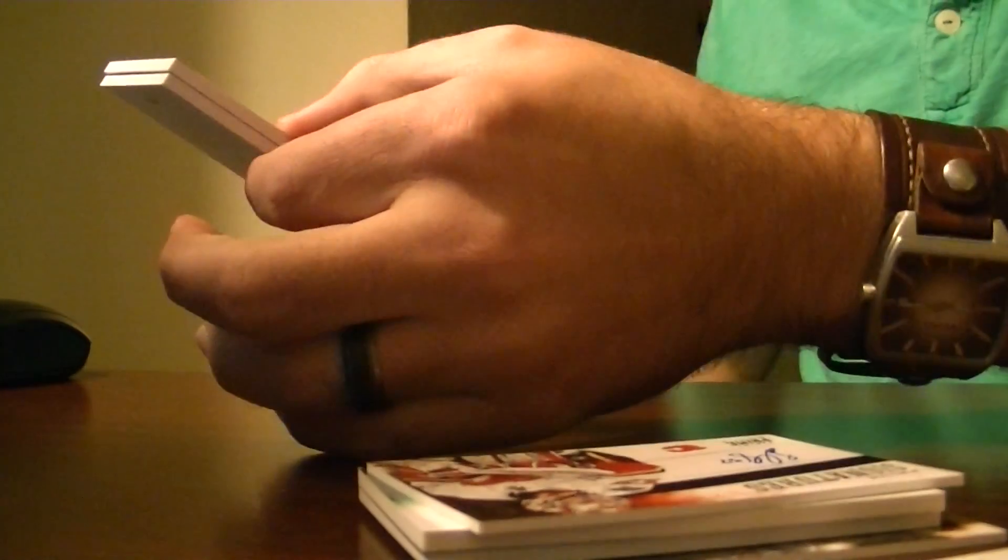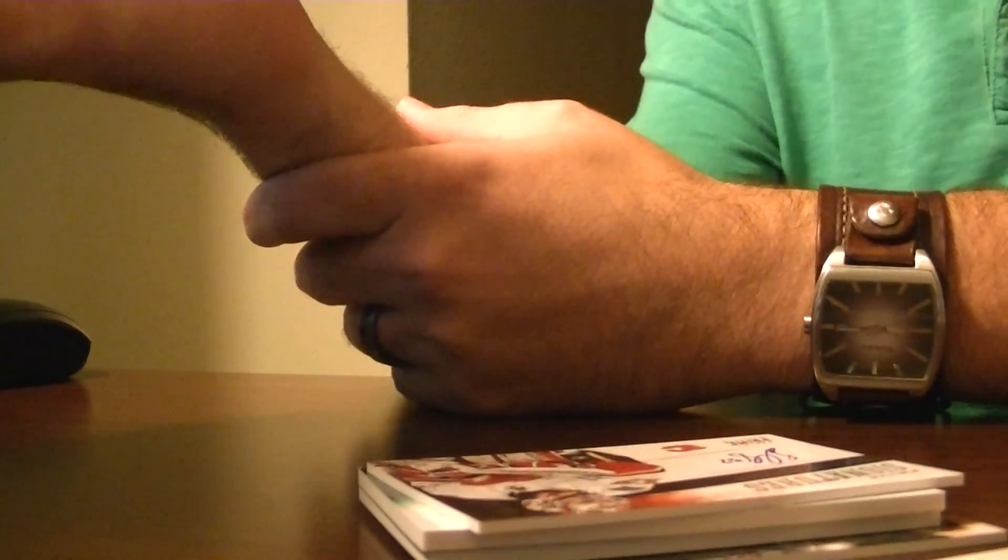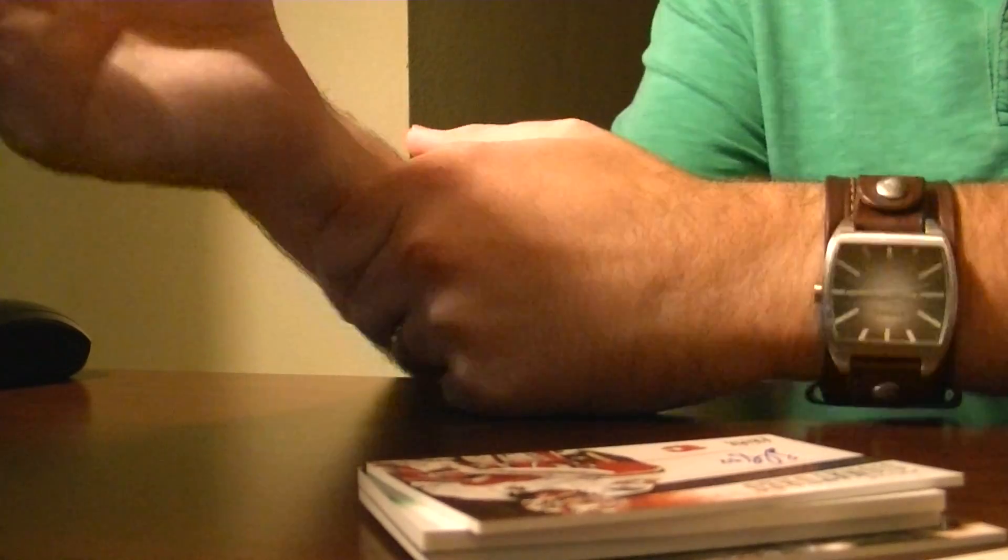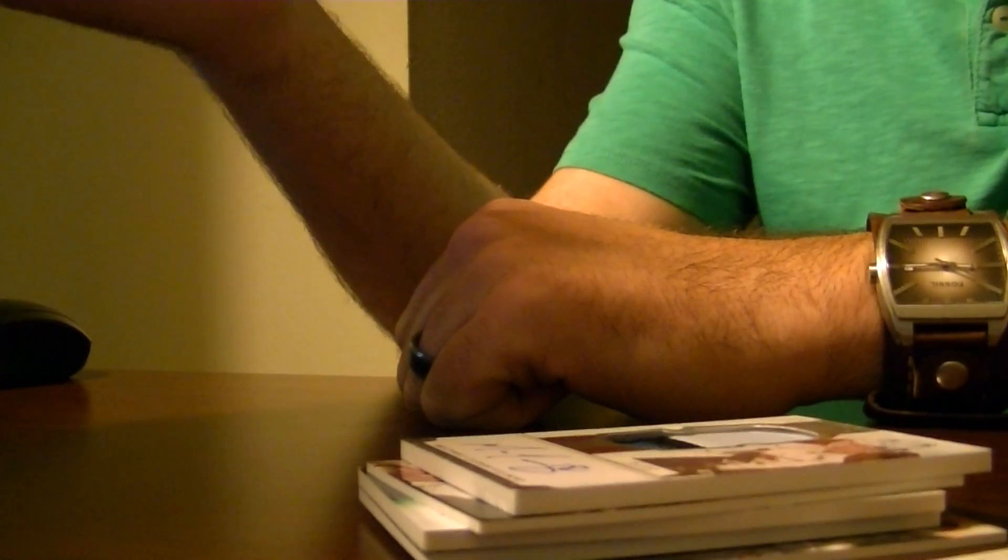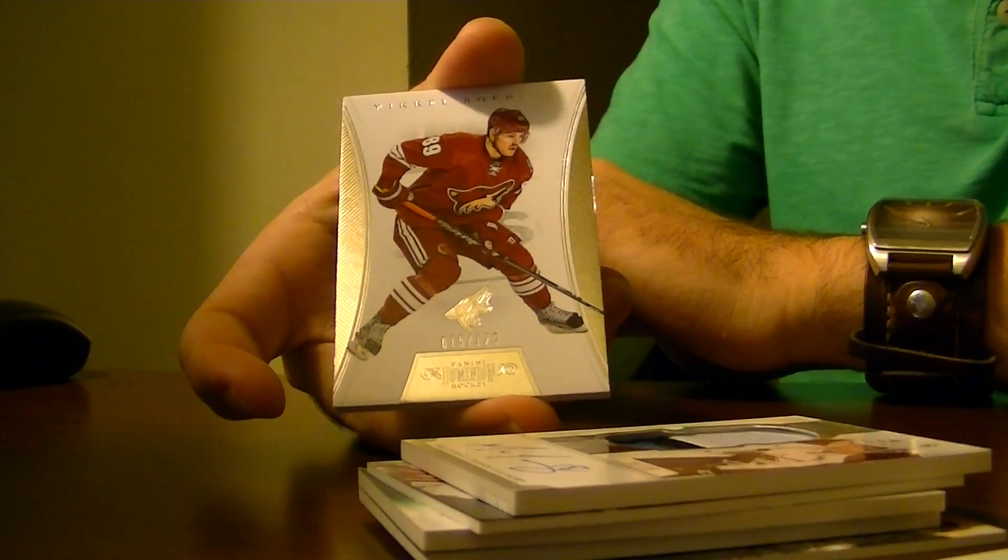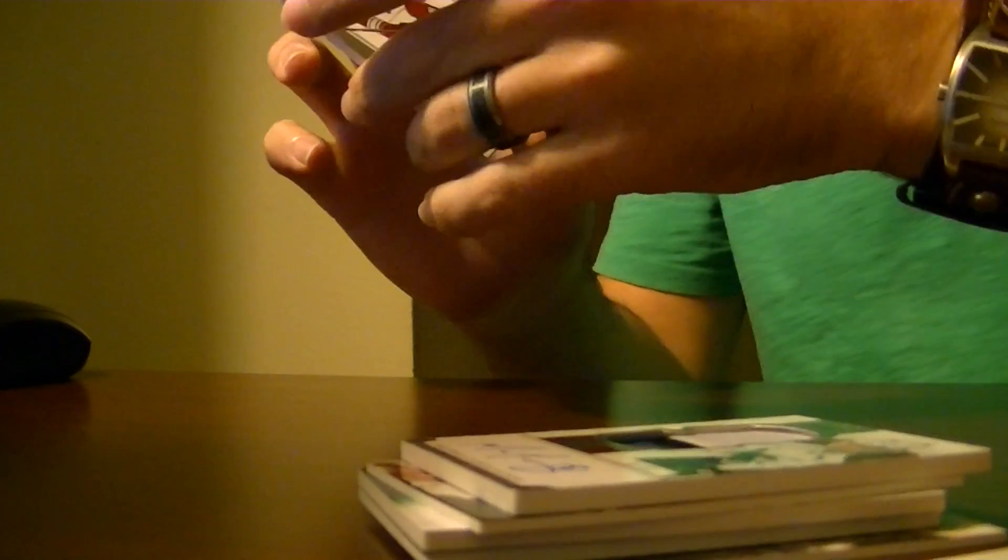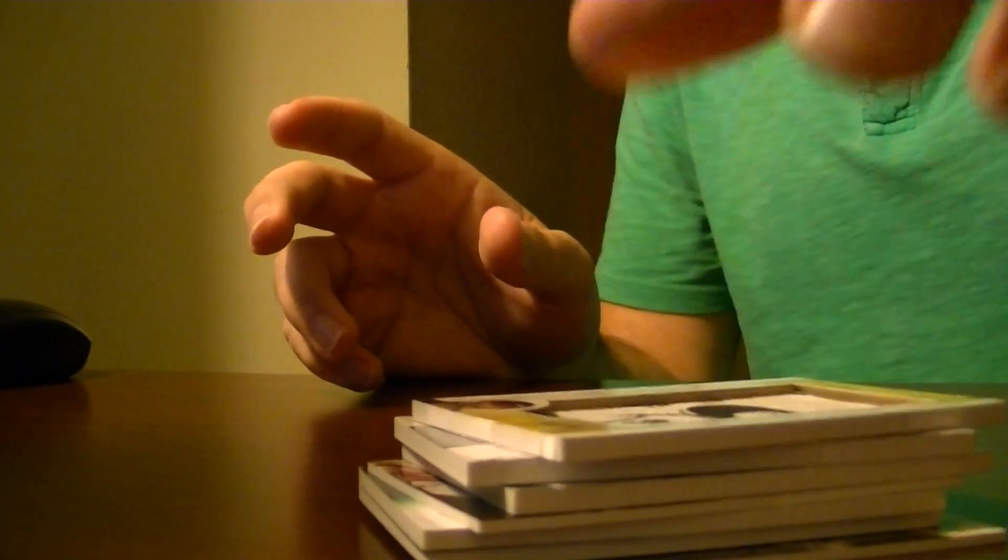Numbered to $99, Rookie Patch Auto of Mike Connolly, three-color. And, numbered to $125, Michael Bodker. I think it's Mikel Bodker. So, Joe, there you have it, sir.